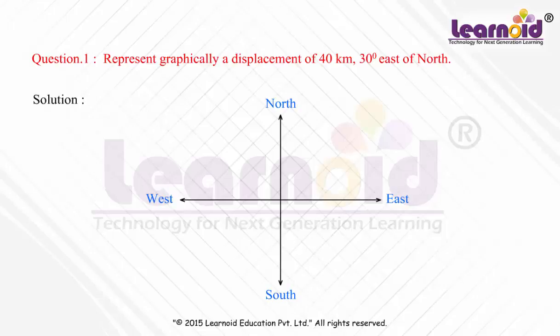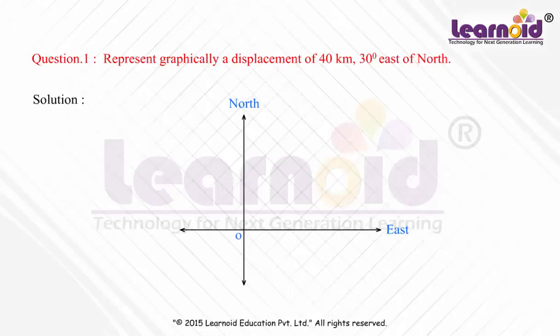Now, in the given problem, the displacement is 40 km towards 30 degrees east of north. We can choose a scale of 1 cm equal to 10 km to represent distance. So, 40 km is equal to 4 cm.